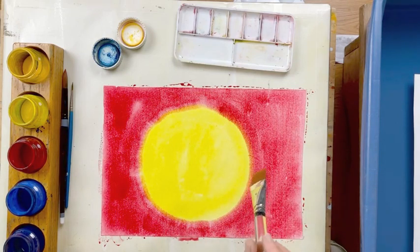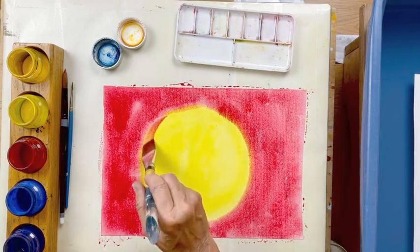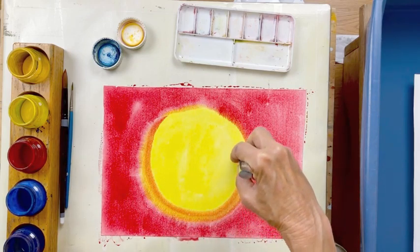You will see that you've made a beautiful orange color. When red and yellow meet, they make orange. If you want to make a little bit more orange, go over it one more time.